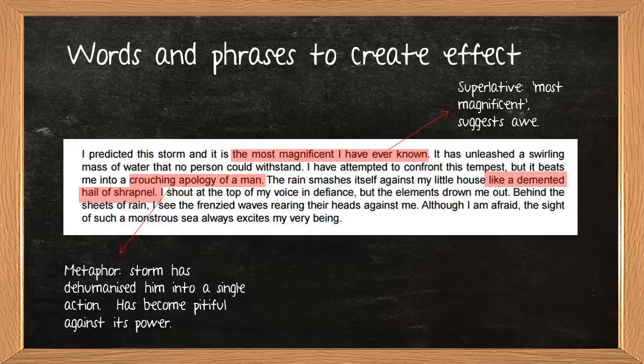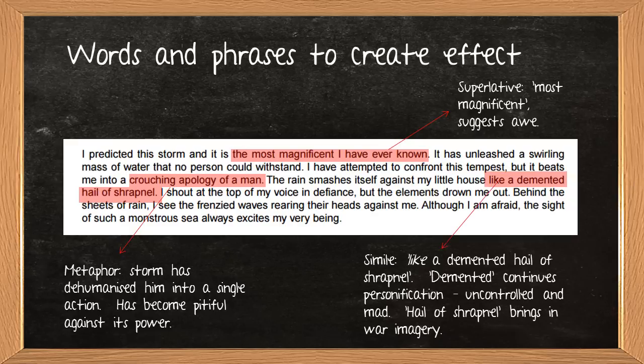I always say, if you're stuck for language devices, if you really find them difficult to spot, then look for similes, because similes are so easy. Straight away, you look for the word like, or you look for the word as. So we've got like a demented hail of shrapnel, so it's a nice and easy spot that we've got a simile there. I like the fact that the word demented, again, continues the idea of personification. It's uncontrolled, it's a bit mad, and the hail of shrapnel brings in war imagery. From the two paragraphs, we've picked out our three examples from each, and I've just annotated them with a technique for you, just as a little reminder to myself not to forget.